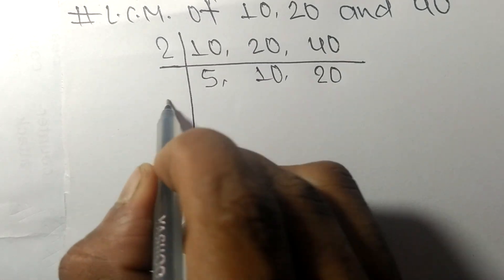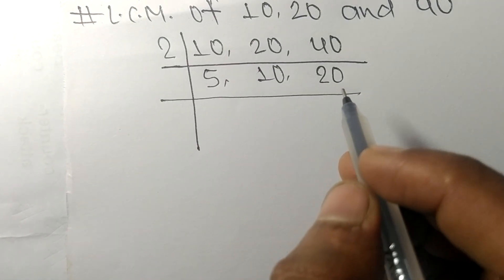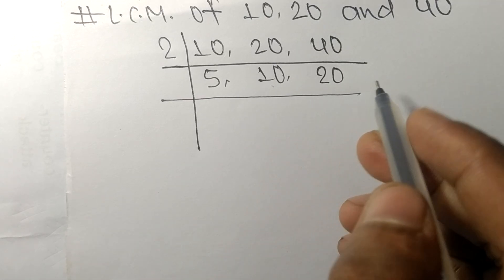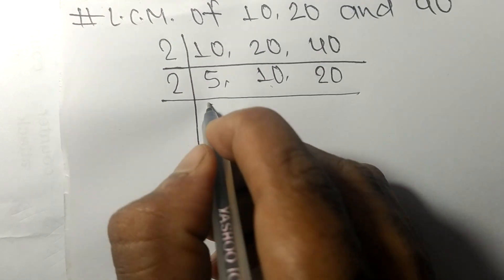So now we got 5, 10, and 20. Among them, 10 and 20 are exactly divisible by 2. 5 is not divisible, so it is the same.